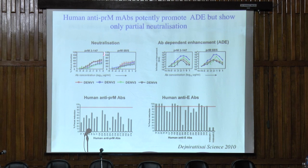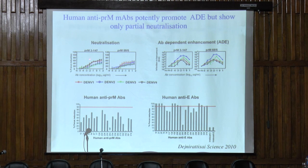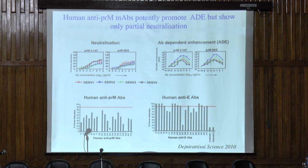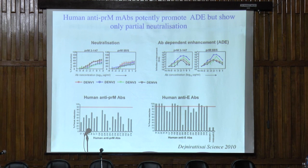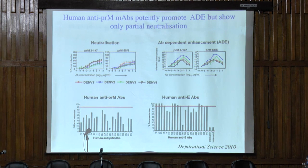These are neutralization curves with increasing concentrations of antibody against the four dengue virus serotypes shown in four different colors. The one thing you can see is that the precursor membrane protein antibodies can neutralize, but none of them — and they are quite cross-reactive — can neutralize above about 30, 40, or 50 percent. That is absolutely consistent across all of these antibodies.